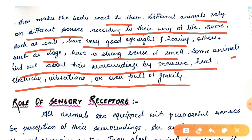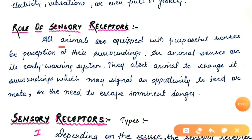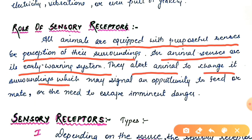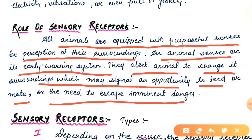The role of sensory receptors is very important. All animals are equipped with purposeful senses for perception of their surroundings — animal senses are their early warning system. Sensory receptors alert an animal to changes in its surroundings, which may signal an opportunity to feed or mate, or the need to escape imminent danger. So they help in giving opportunities, escaping, and finding mates.